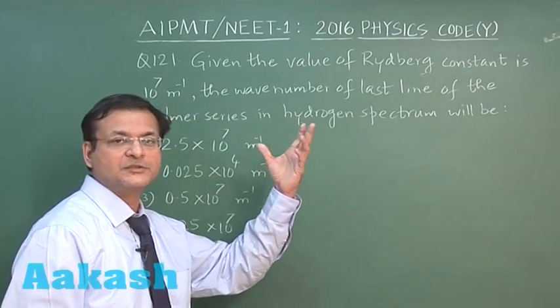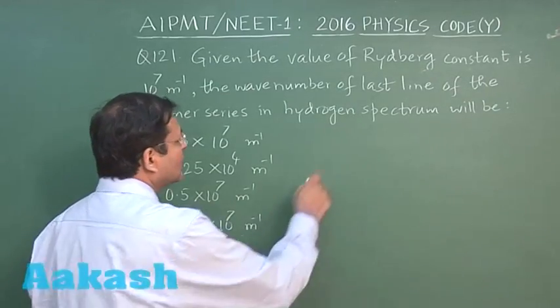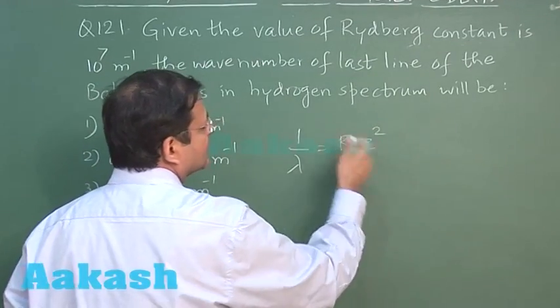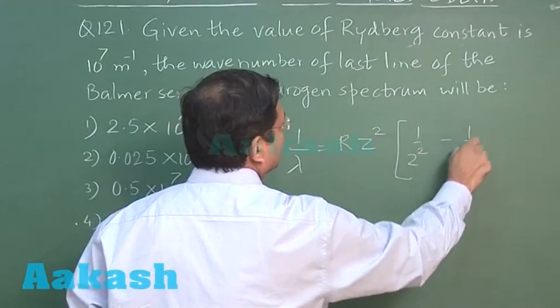It is falling - the electron is falling from infinity to 2. n is equal to 2. So use the formula 1 by lambda, this is called wave number, is RZ square. For hydrogen, Z is 1. 1 by 2 square minus 1 by infinity square.